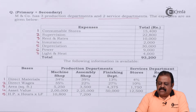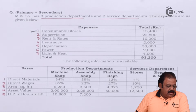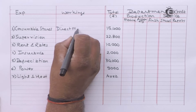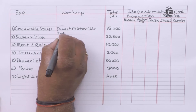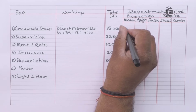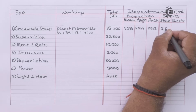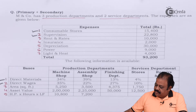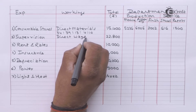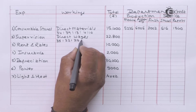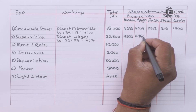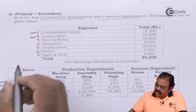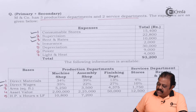Let us consider the expenses. Consumable stores will be allocated based on direct materials. The next expense is supervision — this will be allocated based on direct wages. Next we have rent and rates, which will be allocated based on area.